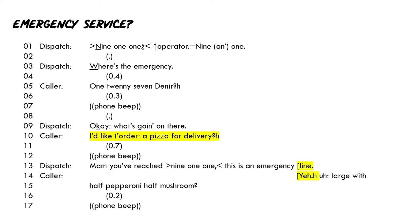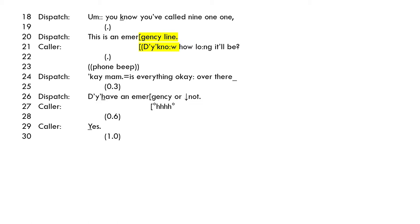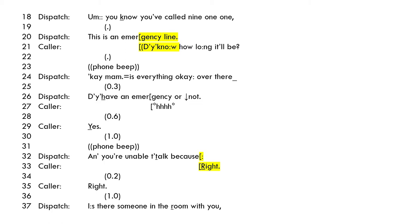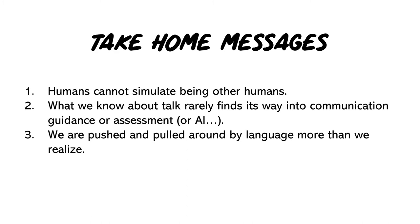Here comes a different negotiation between the dispatcher and the caller. Note the overlap at lines 13 to 14. 'You know you've called 911 — this is an emergency line.' 'Okay ma'am, is everything okay over there? Do you have an emergency or not?' 'Yes.' 'And you're unable to talk because... Is there someone in the room with you? Just say yes or no.' 'Yes.' So my take-home messages in reverse: humans can't simulate being other humans; what we know about talk rarely finds its way into communication guidance, assessment, or AI; we are pushed and pulled around by language more than we realize; and if you want to understand talk, study real talk. Thank you.